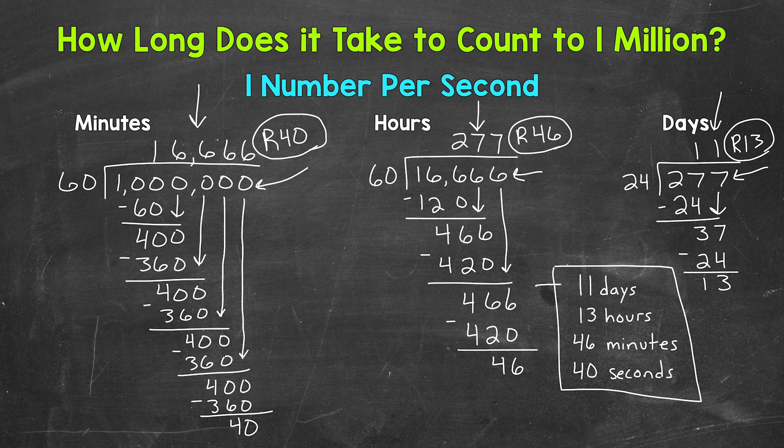That gives us 11 days, 13 hours, 46 minutes, and 40 seconds to count to 1 million when one number is being counted per second.